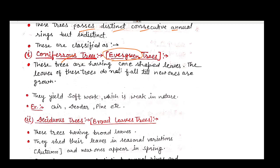Coniferous means evergreen trees which have leaves throughout the season. These trees have cone-shaped leaves. The leaves do not fall until new ones are grown. They yield softwood which is weak in nature. Examples of conifer or evergreen trees are chir, deodar, pine, etc.